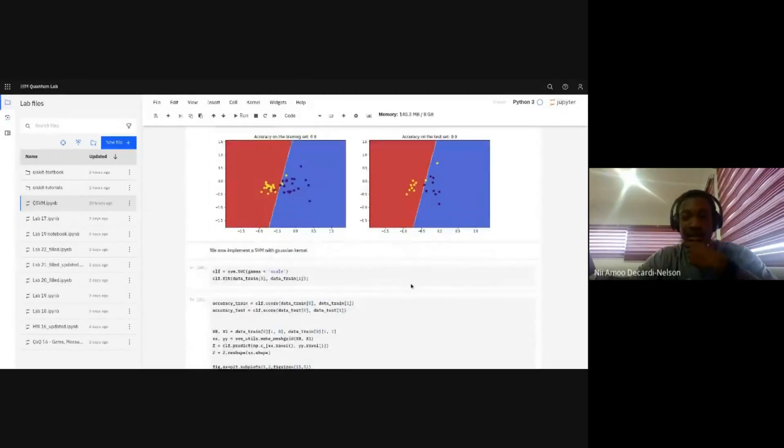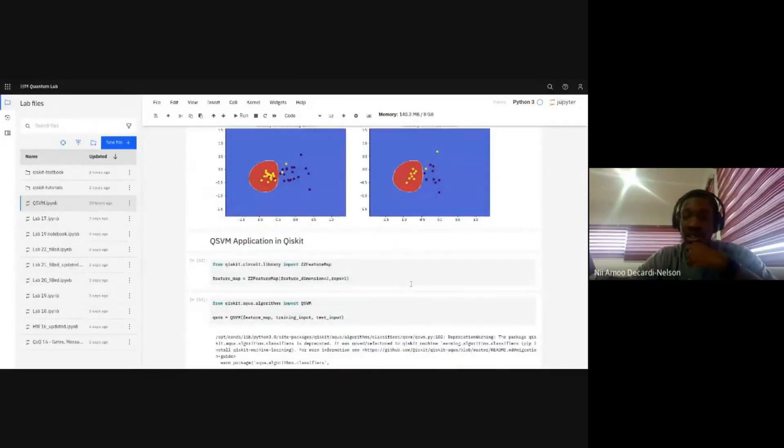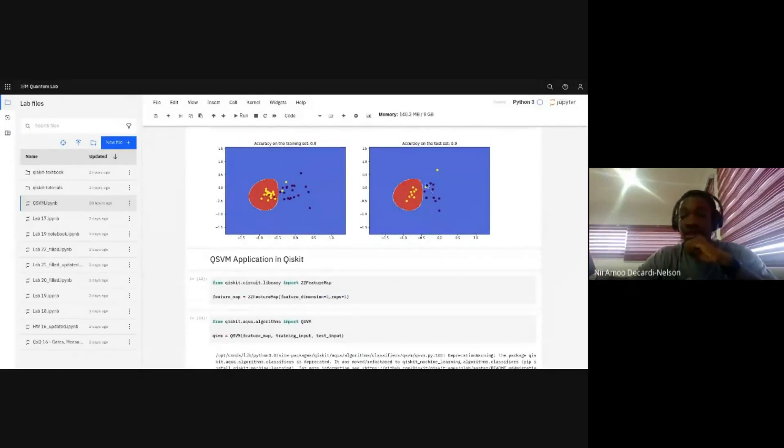Let's see how the implementation would look like when we move to the quantum version. So here, I used a different polynomial, sorry, a Gaussian kernel, and the accuracy was still 90%. So there's no difference between using a linear and then a Gaussian kernel for this particular problem.